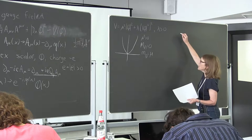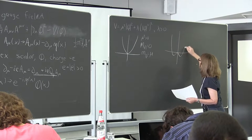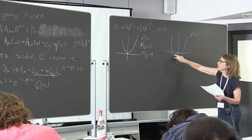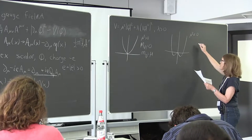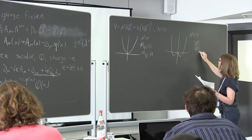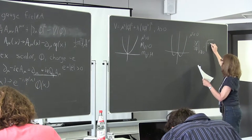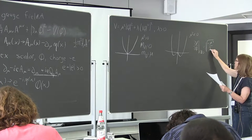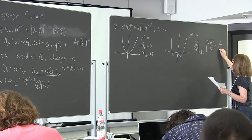Here's the spontaneous symmetry breaking. With μ² less than zero, the minimum is away from zero. The minimum energy is at |φ|_min = √(−μ²/2λ), and we define this to be v/√2. The factor of √2 is just a convention — you always put it in, but it's really just a convention.